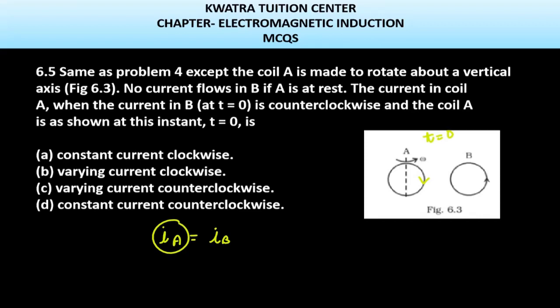So IA will be equal to IB constant. The current in A will be constant. It can't vary; if it varies, then B will also vary. So it must be clockwise and constant. The first option is the correct one. Let's now do the next question, which is question number 6.